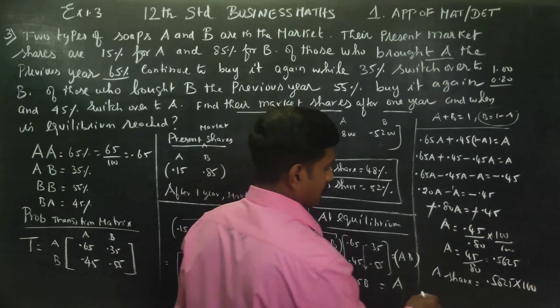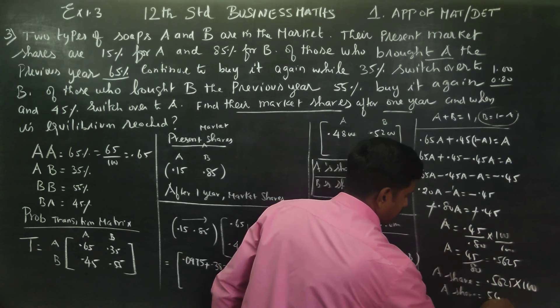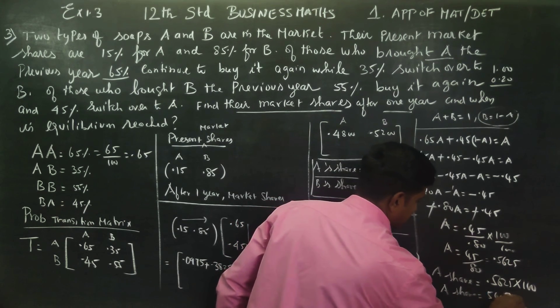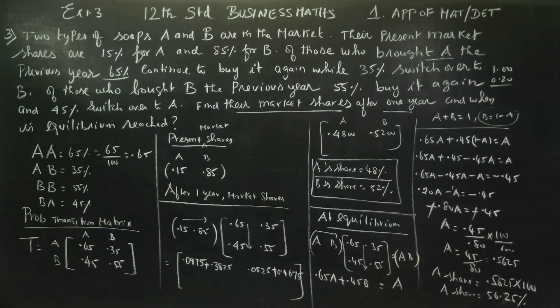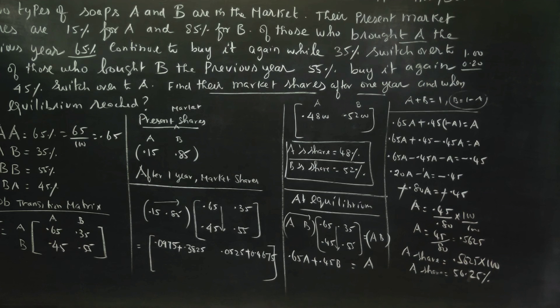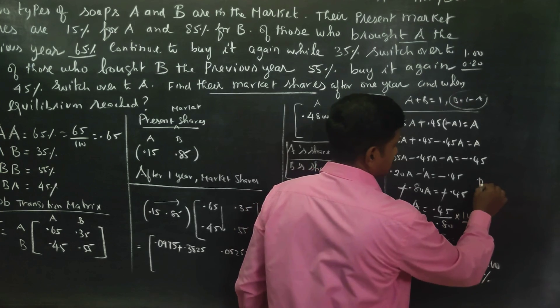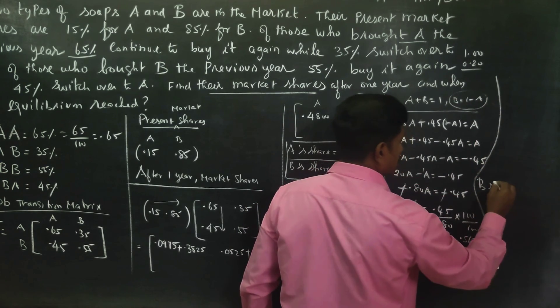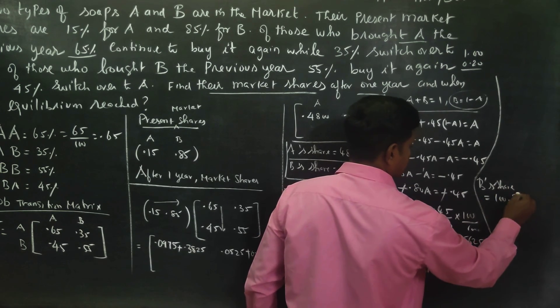Therefore, A's share is equal to 56.25%. This is the equilibrium market. This is A's share. Next, B's share: After finishing A's share, B's share is equal to 100 minus 56.25, which is 43.75%.